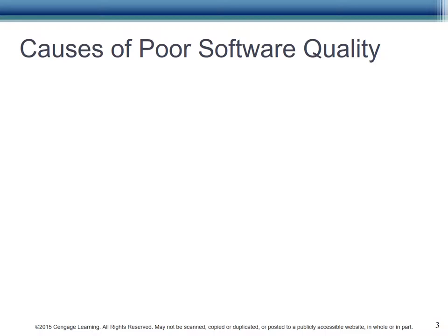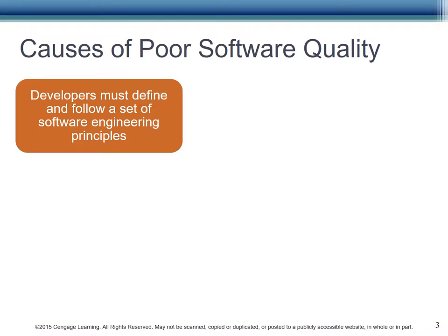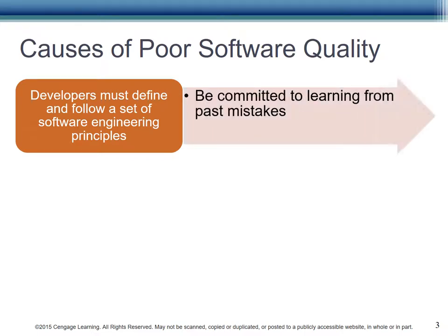There are many causes of poor software quality. To overcome these problems, developers should provide a consistent method of approaching new product development using software engineering principles. It doesn't really matter if you use the waterfall method, agile development, scrum, or other techniques. What's important is that you follow a consistent process, designing quality into each step. Experienced developers reflect on past projects and actively learn from the mistakes made, improving products over time.